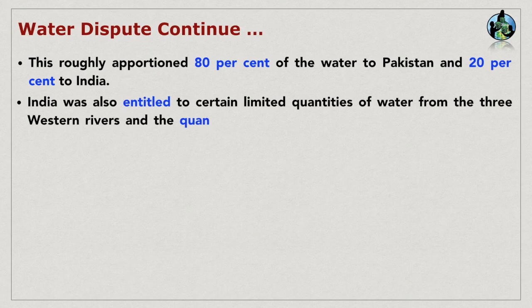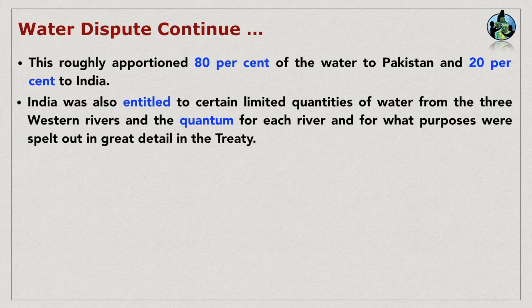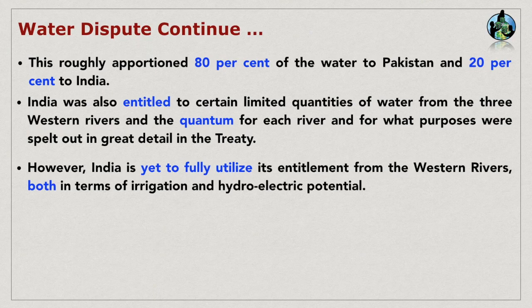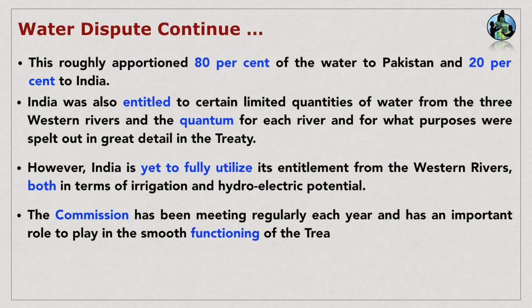India was also entitled to certain limited quantities of water from the three western rivers, and the quantum for each river and for what purposes were spelled out in great detail in the treaty. However, India is yet to fully utilize its entitlement from the western rivers, both in terms of irrigation and hydroelectric potential. The commission has been meeting regularly each year and has an important role to play in the smooth functioning of the treaty.